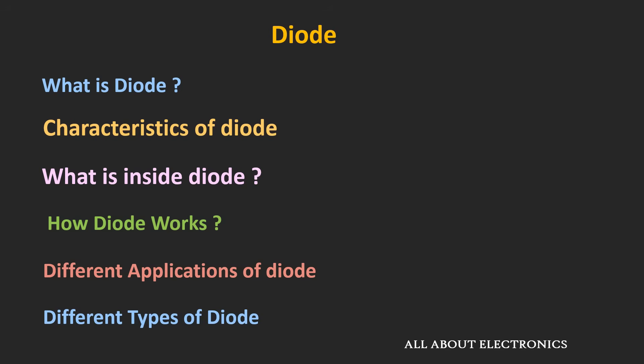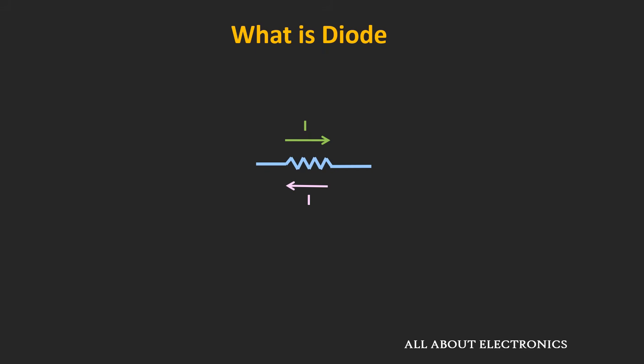We will also see the equivalent circuit for this diode. In the subsequent videos, we will learn about the device physics of this diode and we will also see the different applications of the diode. So now the question is, what is a diode?